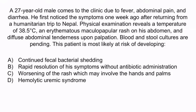Let's review with a question. A 27-year-old male comes to the clinic due to fever, abdominal pain, and diarrhea. He first noticed the symptoms one week ago after returning from a humanitarian trip to Nepal. Physical examination reveals a temperature of 38.5 degrees Celsius, an erythematous maculopapular rash on his abdomen, and diffuse abdominal tenderness upon palpation. Blood and stool cultures are pending. The patient is most likely at risk of developing: A. Continued fecal bacterial shedding, B. Rapid resolution of symptoms without antibiotic administration, C. Worsening of the rash which may involve the hands and palms, or D. Hemolytic uremic syndrome. The three key elements pointing to typhoid fever are: gastrointestinal problems, recent travel history to a developing country, and a maculopapular rash on the abdomen. The correct answer is A.